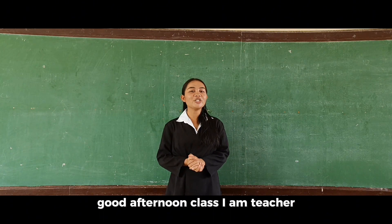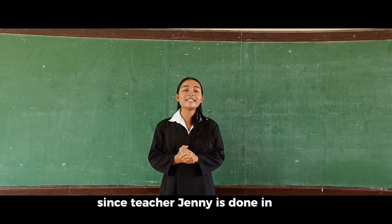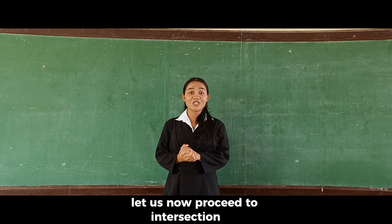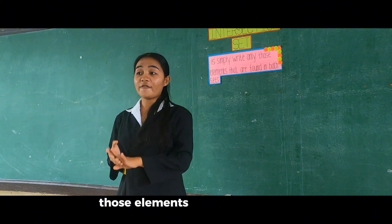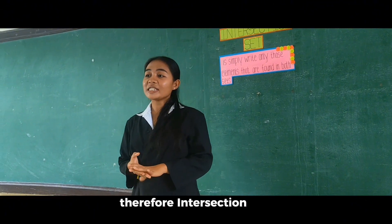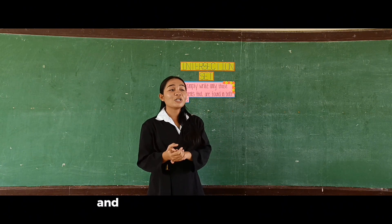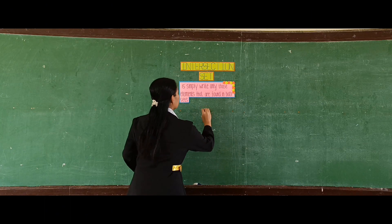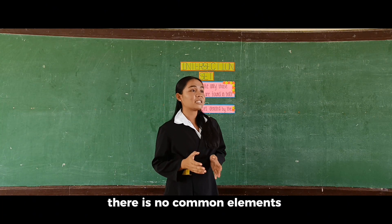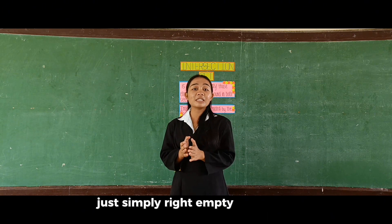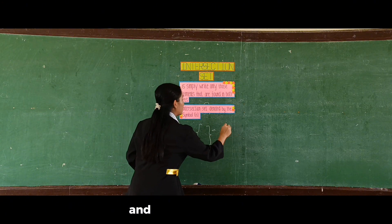Good afternoon, class. I am Teacher Jeremy A. Melendez, but you can call me Teacher Jera. So this afternoon, since Teacher Jenny is done discussing the union, let us now proceed to intersection set. What is intersection set? Intersection set simply writes those elements that are found in both sets. Therefore, intersection set contains the common letters or numbers found in both sets, and it is denoted by this symbol. However, if there are no common elements in each set, just simply write empty set or null set — here is the symbol for both.